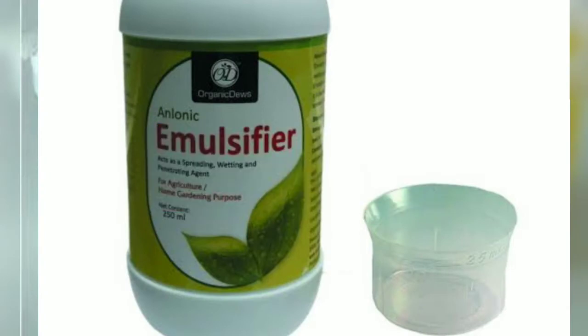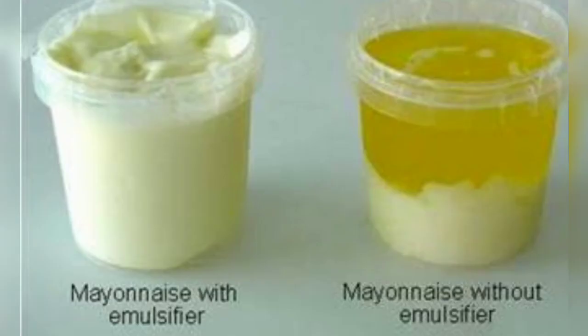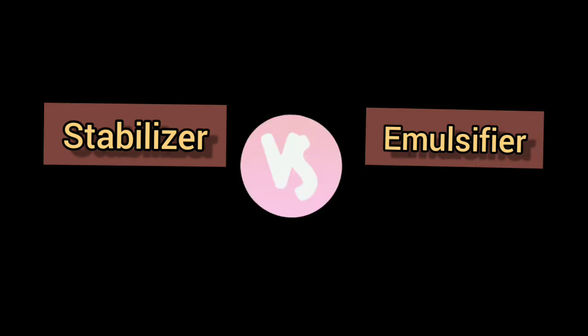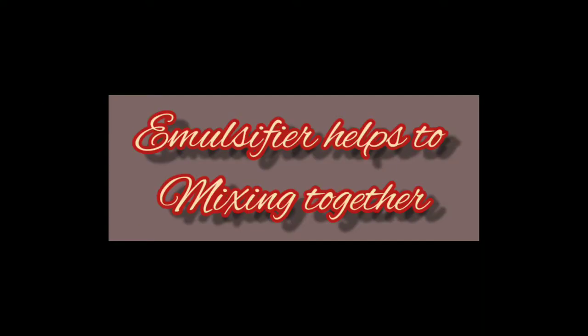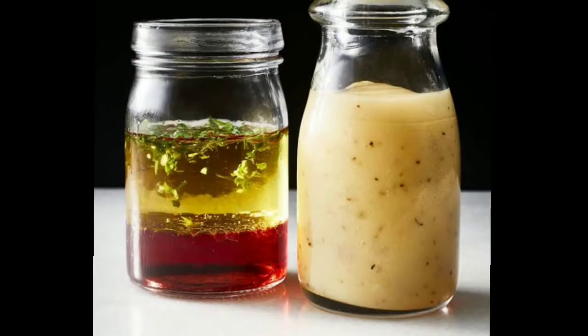Emulsifiers encourage the suspension of one liquid in another, such as the mixture of oil and water in shortening and ice cream. There is often confusion about what stabilizers and emulsifiers do.